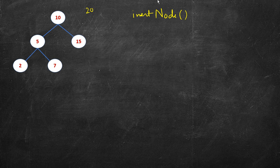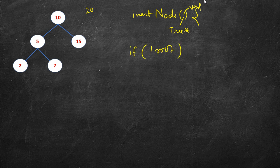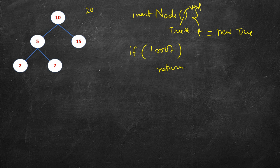The function name may differ from what is given on LeetCode. We are given a tree pointer, and there is a possibility that the tree is empty. So if root is null, we simply create a new node: tree star t equals new tree with the given value, and return t as the root.